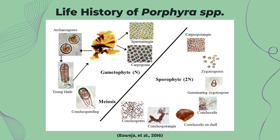The conchocelis phase, which serves as a survival stage, can survive in adverse environmental conditions, but will give rise to conchosporangia and conchospores only when the conditions are right. The conchospores germinate by bipolar modes to give rise to young thalli.